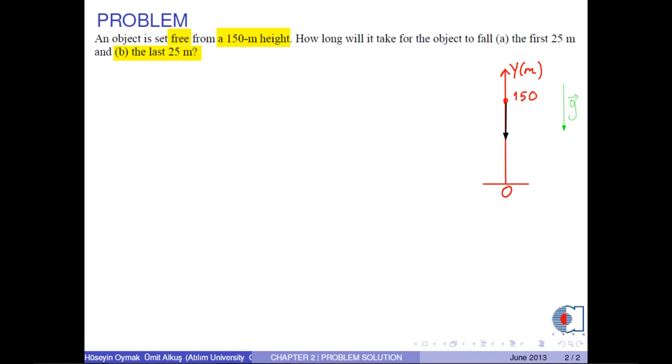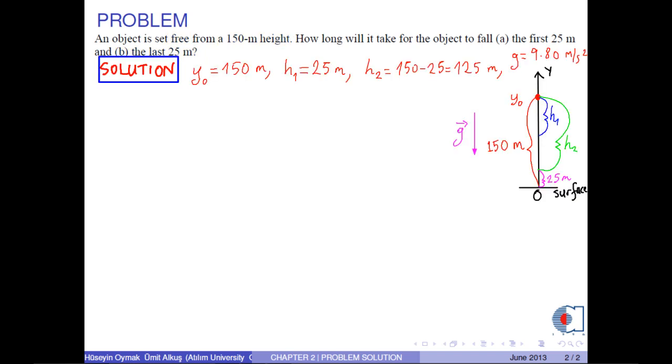First of all, we write the given quantities in appropriate units. This problem is an example of free fall motion. So, we use this formula: h equals 1 over 2 g times t squared.